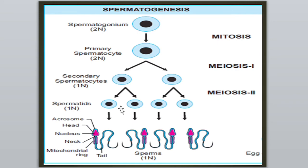At that time یہ spermatids non-motile ہیں اور ان میں بہت سی changes occur ہوں گی تاکہ انہیں motile cells میں convert کیا جا سکے۔ Their nuclei shrink اور کچھ structures form ہوتے ہیں — for example: ایک acrosome بنتا ہے، پھر ایک tail بنتی ہے جسے flagella کہتے ہیں، اور neck پر mitochondrial ring بنتی ہے جو energy storehouse ہوتی ہے۔ Nucleus inside the acrosome موجود ہوتا ہے — after these structures، ایک spermatid complete sperm میں convert ہو جاتا ہے۔